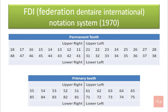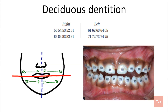Moving on to the third system, that is the FDI (Federation Dentaire Internationale) notation system, which started to be followed in 1970. In this system, every quadrant has a specific number: 5 is the upper right quadrant, 6 is the upper left quadrant, 7 is the lower left quadrant and 8 is the lower right quadrant. For example, the number 5-1: 5 represents the quadrant, that is the upper right quadrant, and 1 represents the number of tooth, that is the central incisor. The quadrants go from 5-1 to 5-5, 6-1 to 6-5, 7-1 to 7-5 and 8-1 to 8-5, so total teeth are 20.